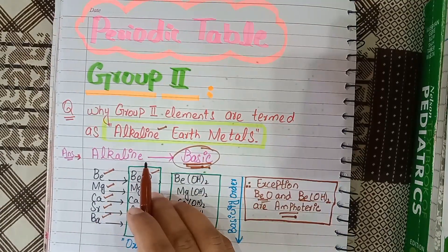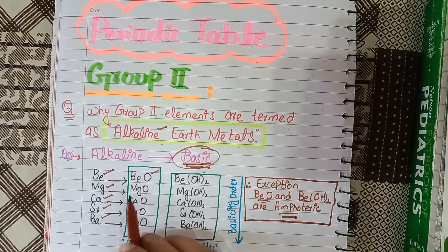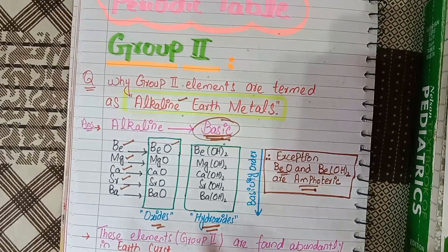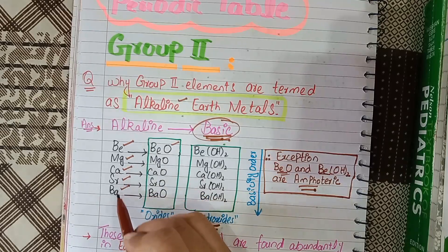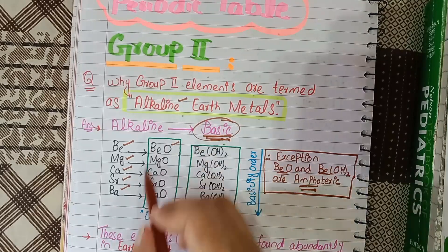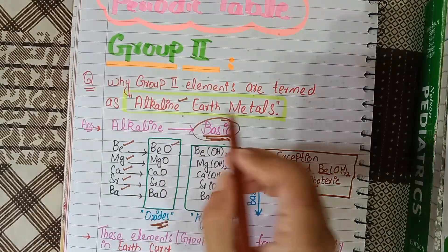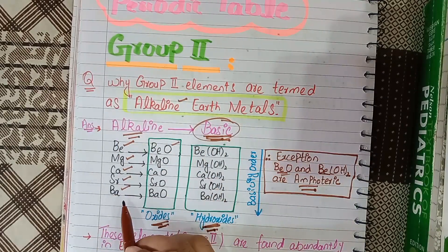The term alkaline represents the basic nature of group 2 elements — beryllium, magnesium, calcium, strontium, and barium. If we talk about their oxides and hydroxides, these are basic in nature. That's why group 2 elements are generally termed as alkaline.